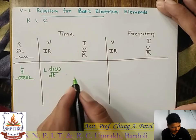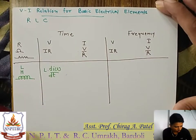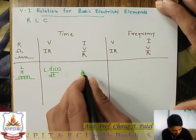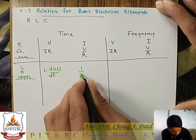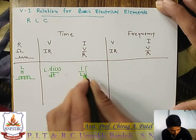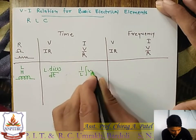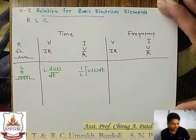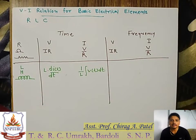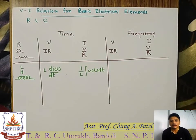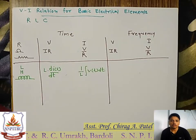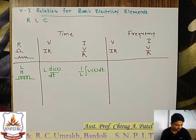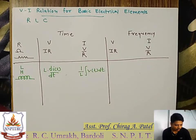Now the current through the inductor in the time domain: I is equal to 1 upon L, integration of v(t) dt. Simple equation — I is equal to 1 upon L, integration of v(t) dt. Now we are going towards the frequency domain.